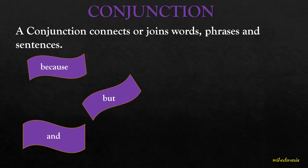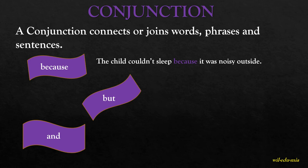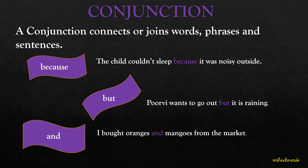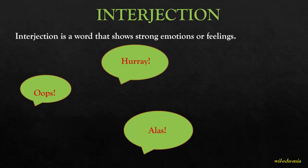Conjunction. A conjunction connects or joins words, phrases, and sentences. For example, 'The child couldn't sleep because it was noisy outside' — two sentences joined by because. 'Pooja wants to go out but it is raining' — two sentences joined by but. 'I bought oranges and mangoes from the market' — two words joined by and. So because, but, and and are conjunctions.